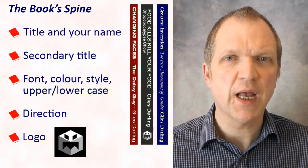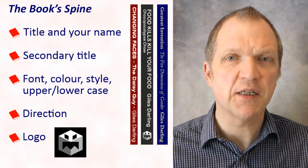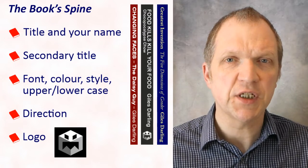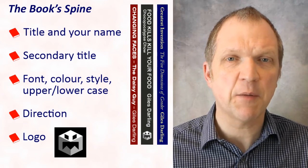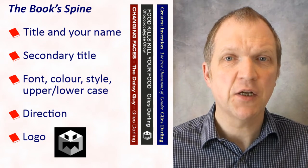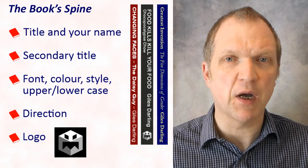In the UK, the text on a book's spine traditionally reads from the top of the spine down to the bottom. In other countries, such as France, the text on the spine is usually written from bottom to top. It's up to you which way you show the text. If there's enough space, you might also include a logo at the bottom of the spine.